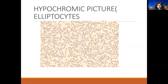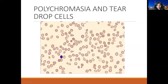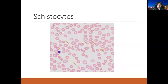These RBCs are a bit bigger and have reduced central pallor. These cells also show tear drop formations, so this is probably indicating some kind of myelofibrosis or bone marrow infiltration.